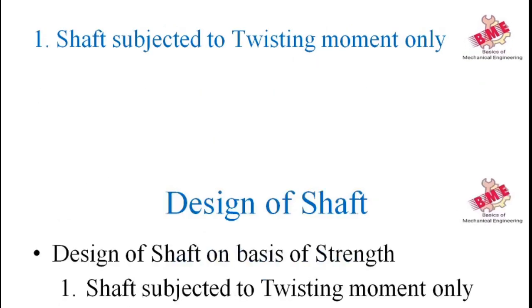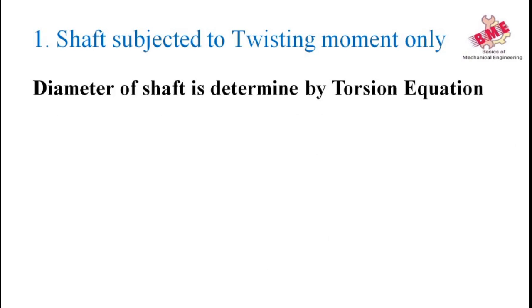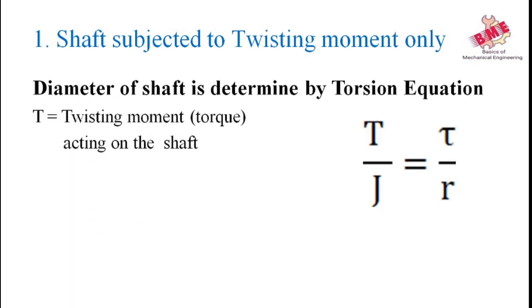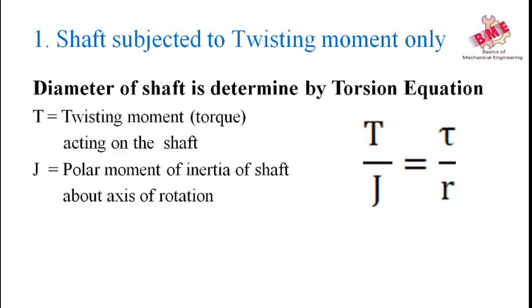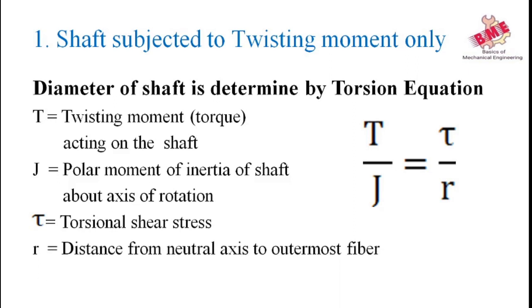Now we will see shaft subjected to twisting moment only. The diameter of shaft is determined by the torsion equation, which we have seen in the previous subject SOM. The equation is T/J = τ/R, where T is the twisting moment or torque acting on the shaft, J is the polar moment of inertia about the axis of rotation, τ is the torsional shear stress, and R is the distance from the neutral axis to the outermost fiber.